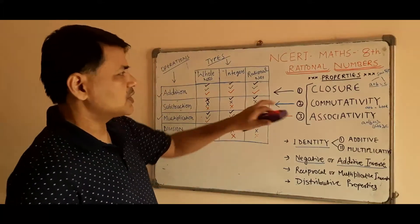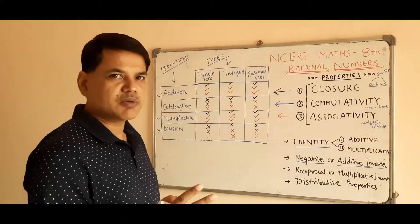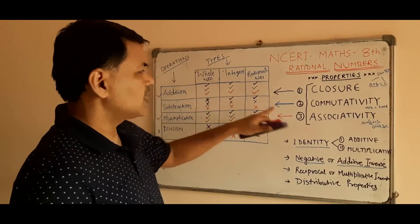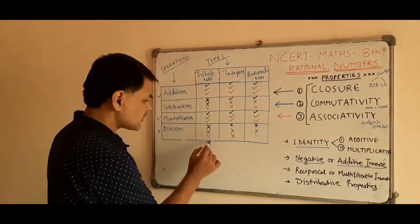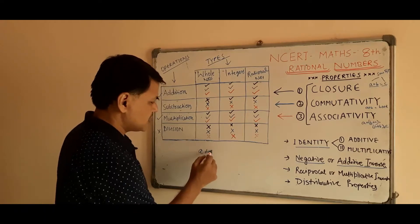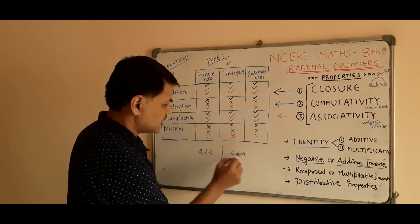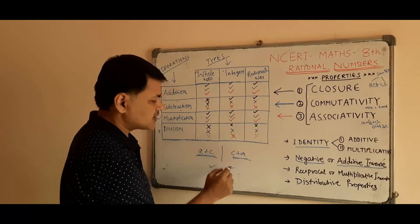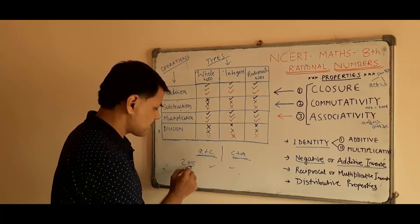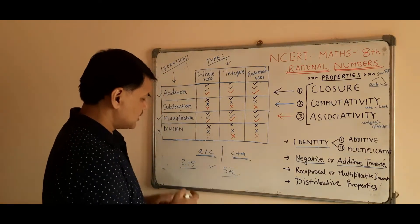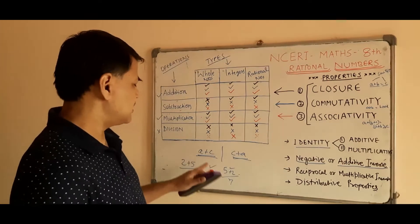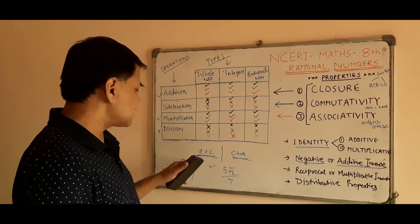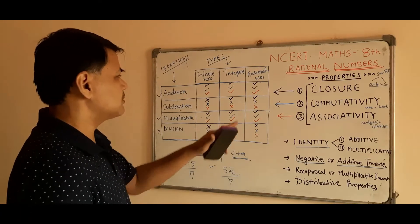Just now we saw what closure property is — if you perform any operation on two same-type numbers and the result is also the same type of number, then we say it is closed. Next, let's see commutative property. If we say a plus b, and if we swap the numbers, changing their position, and the value is still the same, then we say it is commutative. For example, 2 plus 5 and 5 plus 2 give the same result, so we can say addition of whole numbers or integers is commutative — and the cheat sheet confirms this.